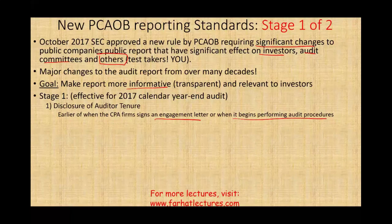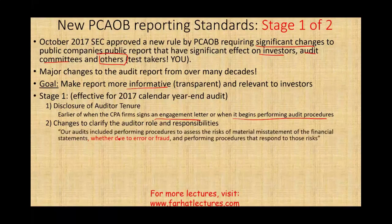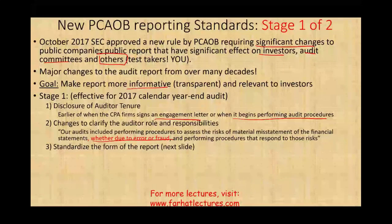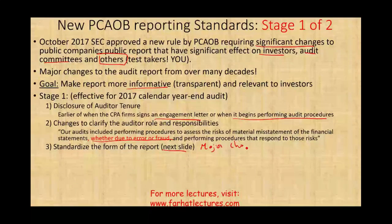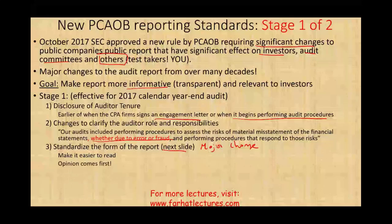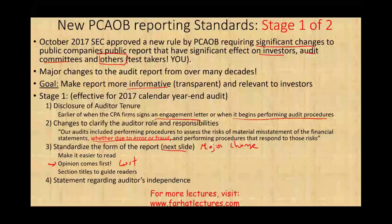They also made changes to clarify the auditor's role and responsibility. They added a statement: 'Our audit included performing procedures to assess the risk of material misstatements of financial statements, whether due to error or fraud, and performing procedures that respond to those risks.' The third change is they standardized the form of the report. The purpose is to make it easier to read and emphasize the opinion — the opinion now comes first, whereas it used to be last. They also added section titles to guide readers, a statement regarding the auditor's independence, and a statement addressing the report to the shareholders and the board of directors.